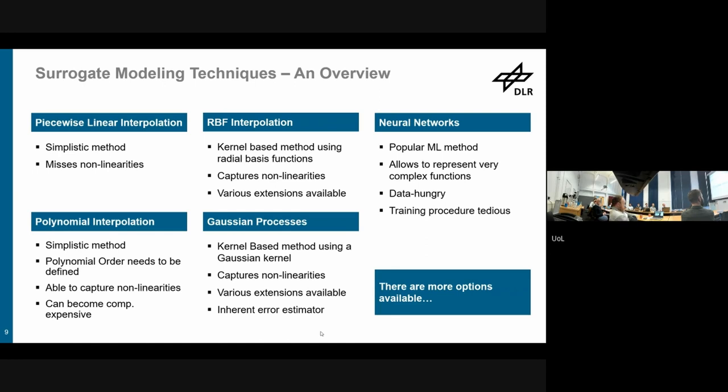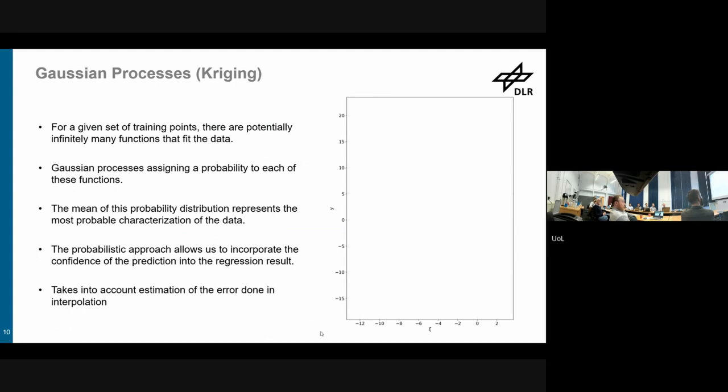Following on it, say a few words about Gaussian processes. Essentially the idea is if you have a set of training points, there are potentially infinite many number of functions that fit the data. And Gaussian processes assign a probability to each of these functions, and then you do some hyperparameter optimization. And in the end, the mean of this probability distribution represents the most probable characteristic of the data. And then this approach allows to incorporate uncertainties that you have on the data as well, because you already have a probabilistic mindset, and it takes into account and provides an error estimation done in the interpolation.